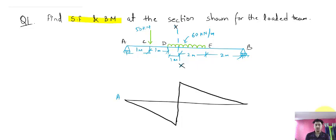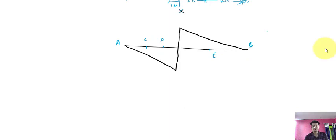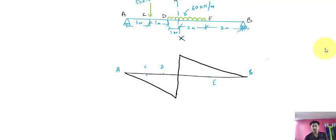Now you need to find the coordinates of the key points: A, B, C, D, and E. After drawing the ILD, this coordinate equals the distance B divided by the total length. So this will be 2 plus 2 = 4 upon total distance 7, so this coordinate is 4 upon 7. This coordinate will be a upon total length — a is 3 and total length is 7 — so this is 3 upon 7. Now we can calculate the value under which the UDL is acting.